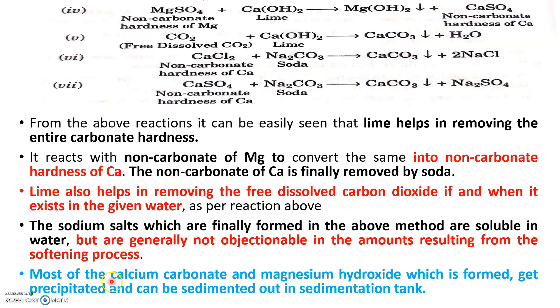In this method, the calcium carbonates and magnesium carbonates which are formed get precipitated and settled down in the sedimentation tank itself, as you can see in the above reactions.